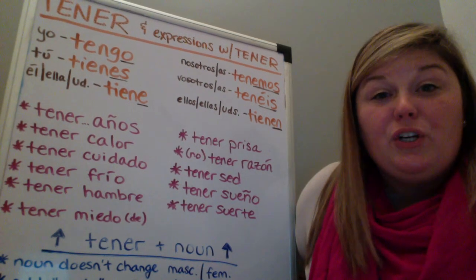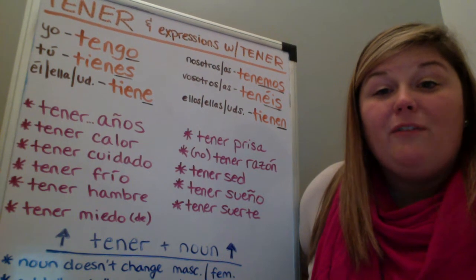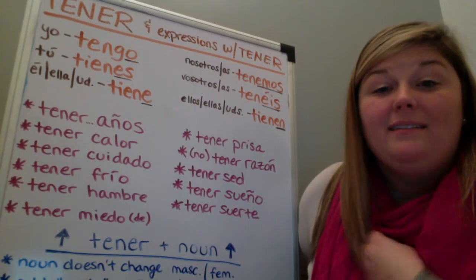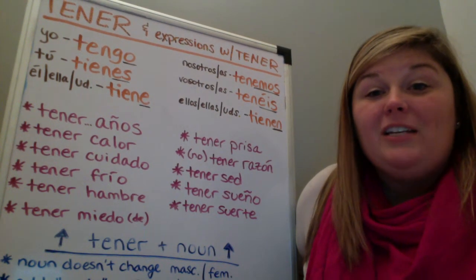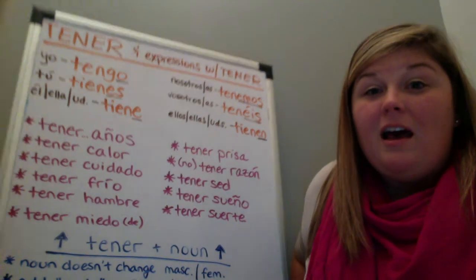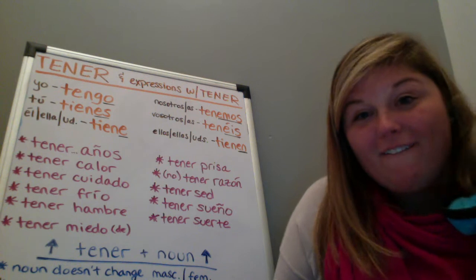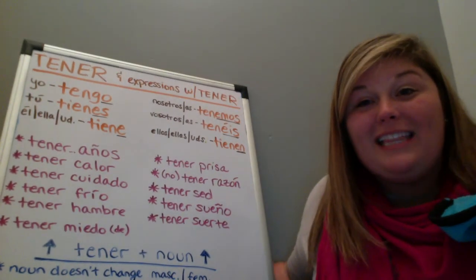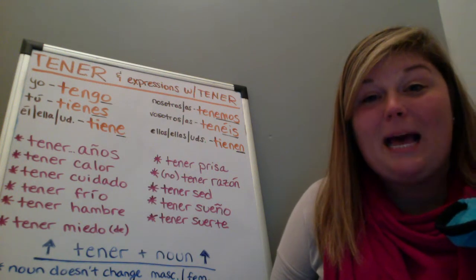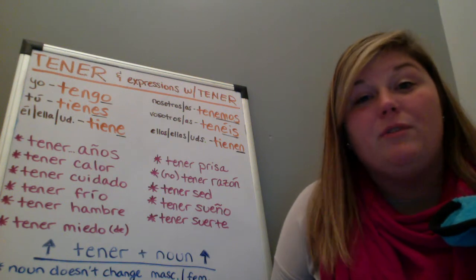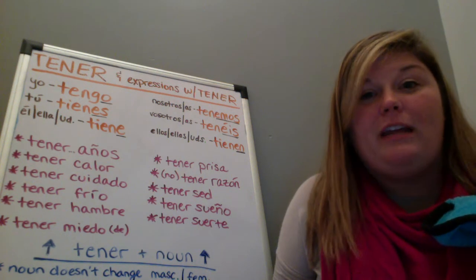Tener hambre means to be hungry — literal translation is 'to have hunger,' but we use it in English to mean to be hungry. So 'I am hungry' is tengo hambre. The next expression, tener miedo, means to be scared — you can also say to be scared of something. So 'I am scared' is tengo miedo, or 'I am scared of spiders' is tengo miedo de las arañas. Tener prisa means to be in a hurry — literally 'to have hurry,' but in English we say to be in a hurry. So 'I'm in a hurry' is tengo prisa.